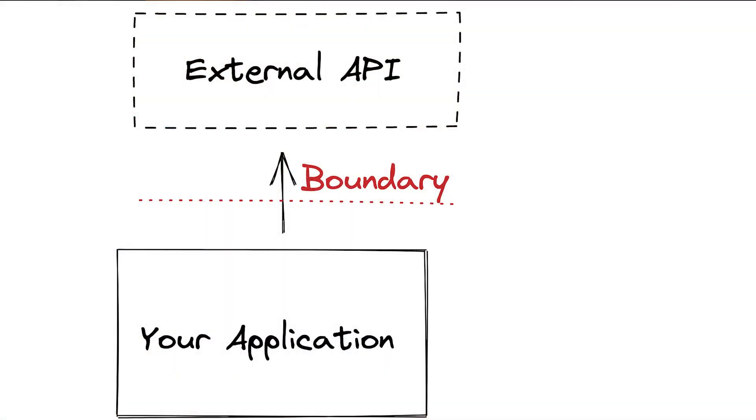When you interact with a third-party API, you have a physical boundary between you and the API. You have a network call distance — you're away from them. You cannot do a local call and get a response; you need to make a call through the network. Not only that, but you do not have control over what they respond. They have their specification. You might have documentation, but you cannot control that — you can only react to it. That is an example of a boundary.